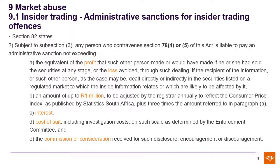Section 82 also deals with section 78.4 and 78.5 — you don't just get away with it; you have an extra sanction added on. As you can see, A, B, C and D are the same: the profit or the loss avoided, an amount of up to a million rand, the interest and the cost of the suit. However, you've also got E: the commission received for such disclosure. So if you were paid to give that information, you have to pay that back. That's part of the section as well.